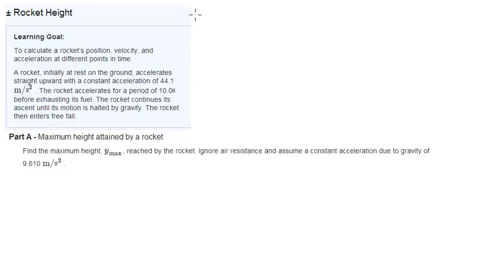Alright guys, now we're going to do the problem rocket height, which says that a rocket initially at rest on the ground accelerates upward with a constant acceleration of 44.1 meters per second squared.